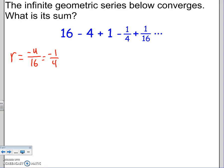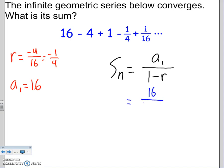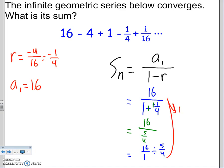Now we use the formula for the sum of an infinite geometric series: S = a₁ / (1 - r). We know a₁ = 16 and r = -1/4. So S = 16 / (1 - (-1/4)) = 16 / (4/4 + 1/4) = 16 / (5/4). Dividing by a fraction means multiplying by the reciprocal: 16/1 × 4/5 = 64/5, which does not reduce. As a decimal, that's 12.8. So that's what all those numbers add up to.